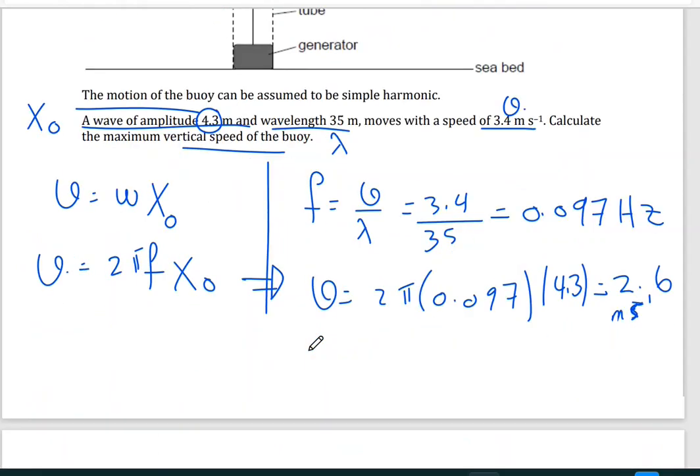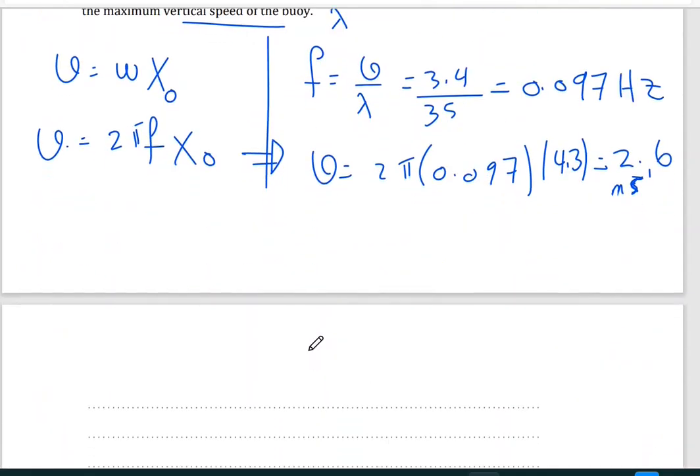Since I have the frequency, I can calculate the period. Period T is 1 over the frequency, it's the inverse or the reciprocal of the frequency. So 1 divided by 0.097 will give us 10 seconds.